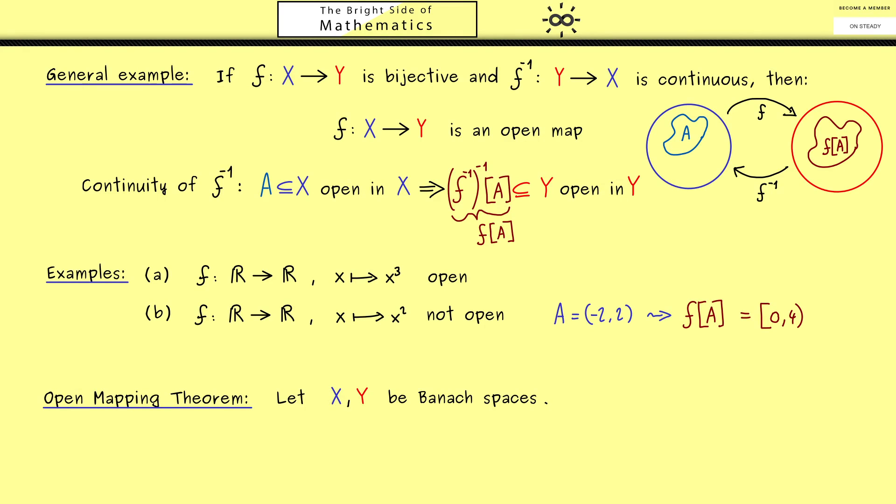Now for a bounded linear operator T, where I use the notation with the curved B again, we have that it is surjective if and only if T is an open map.